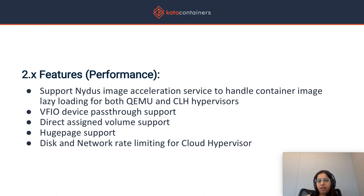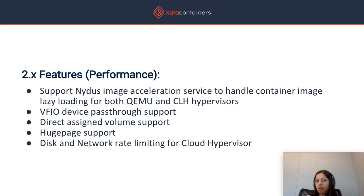We added support for direct assigned volumes. Since Kata makes use of virtual machines, passing in a block device is much more performant and efficient rather than passing in entire volumes through a shared file system such as VirtioFS. We worked with open source communities such as Kubernetes and containerd to make sure that volumes backed by block devices are passed directly to Kata, with the responsibility of mounting those devices left to Kata rather than mounted on the host side. We also added support for huge pages, which ties into our DPDK use case. Finally, we added support for disk and network rate limiting for Cloud Hypervisor — this helps reduce the noisy neighbor problem and ensures that a workload is IO isolated from all other workloads running on the same machine.